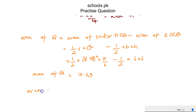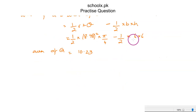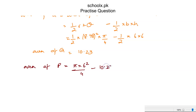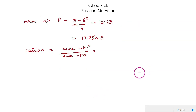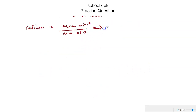Area of P equals π times 6 squared over 4 minus area of Q. That is π times 36 over 4 minus 10.23, giving us 17.95 cm². Taking the ratio, area of P divided by area of Q is 17.95 divided by 10.23, which equals approximately 1.75.